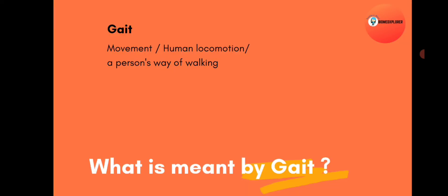What is meant by gait? Gait is a movement or human locomotion, a person's way of walking or style of walking.